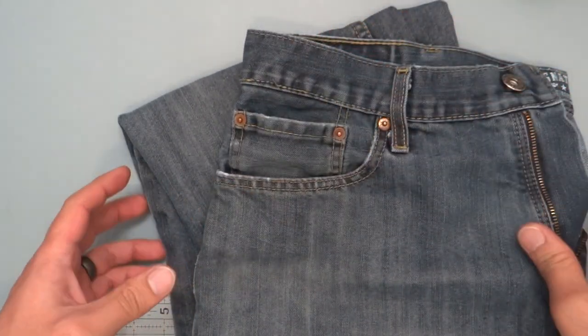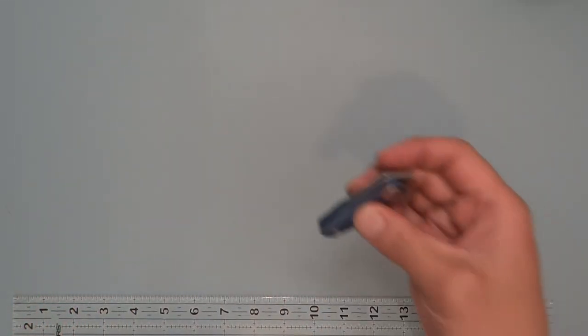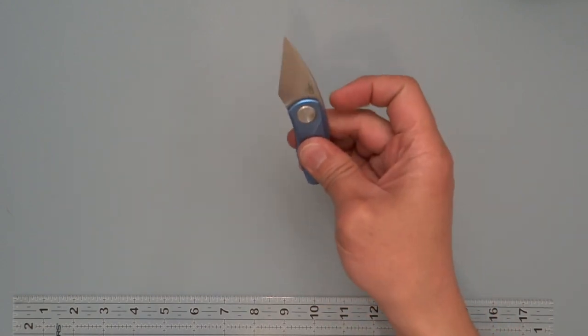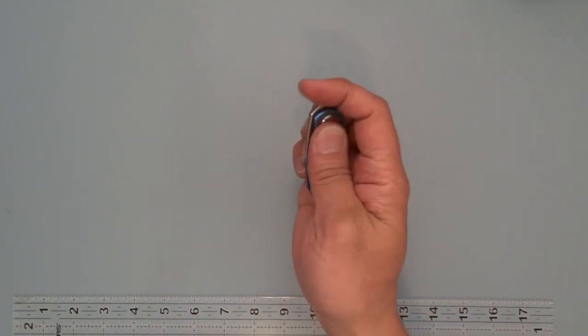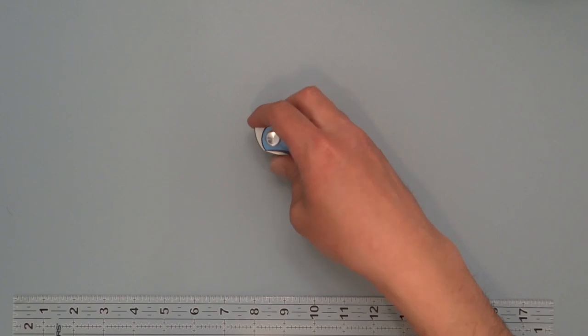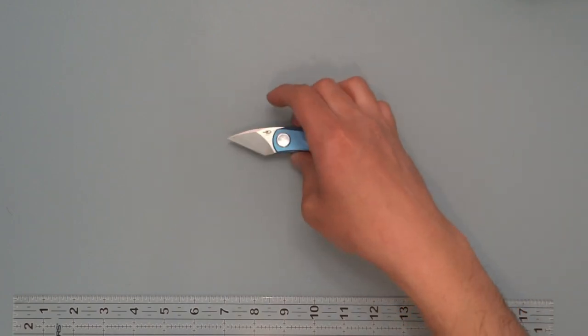There's two different variants on this. There's a slip joint version and a frame lock version. This one is the slip joint version. So it opens and closes without any lock for it. It is very tiny.